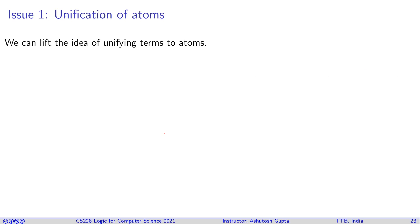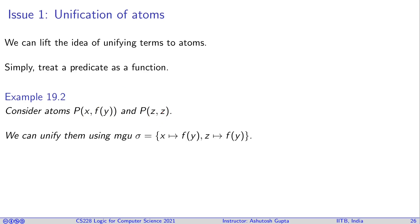Unification of atoms. We can lift the idea of unifying terms to unifying atoms. Simply treat a predicate as a function and then you are set. You can just apply any unification algorithm. For example, if you want to unify this guy to this guy, you simply say, if X should be equal to this guy, this guy should be equal to this guy. Can we unify? And if you do that, then you will get this map. X should be mapped to F(Y), Z should be mapped to F(Y), and then you are done.